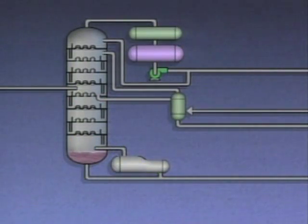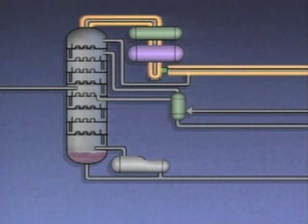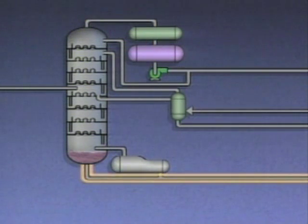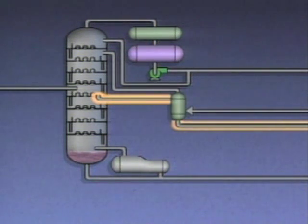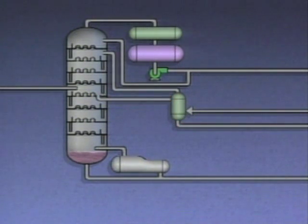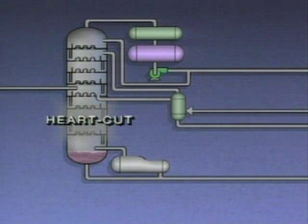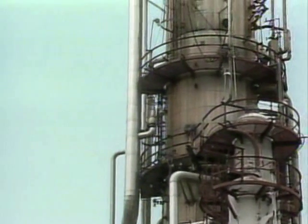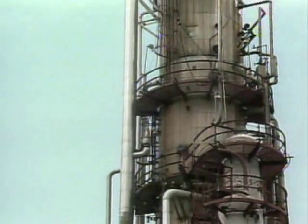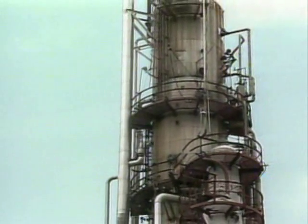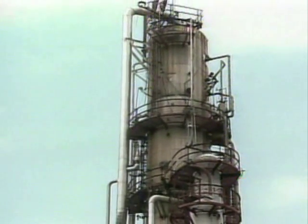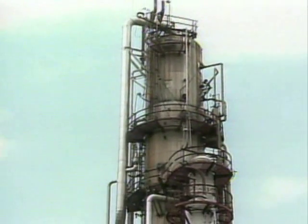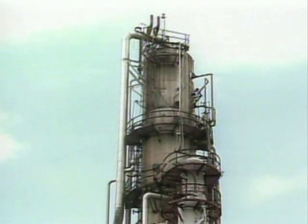For example, one type of multi-draw tower has three draws: one at the top, one at the bottom, and one near the middle. Because a draw or cut is taken out of the middle of this tower, this type is sometimes referred to as a heart-cut tower. Multi-draw towers can also have more than three draws to separate several products from a feed. This one is an atmospheric tower in a crude oil distillation unit.